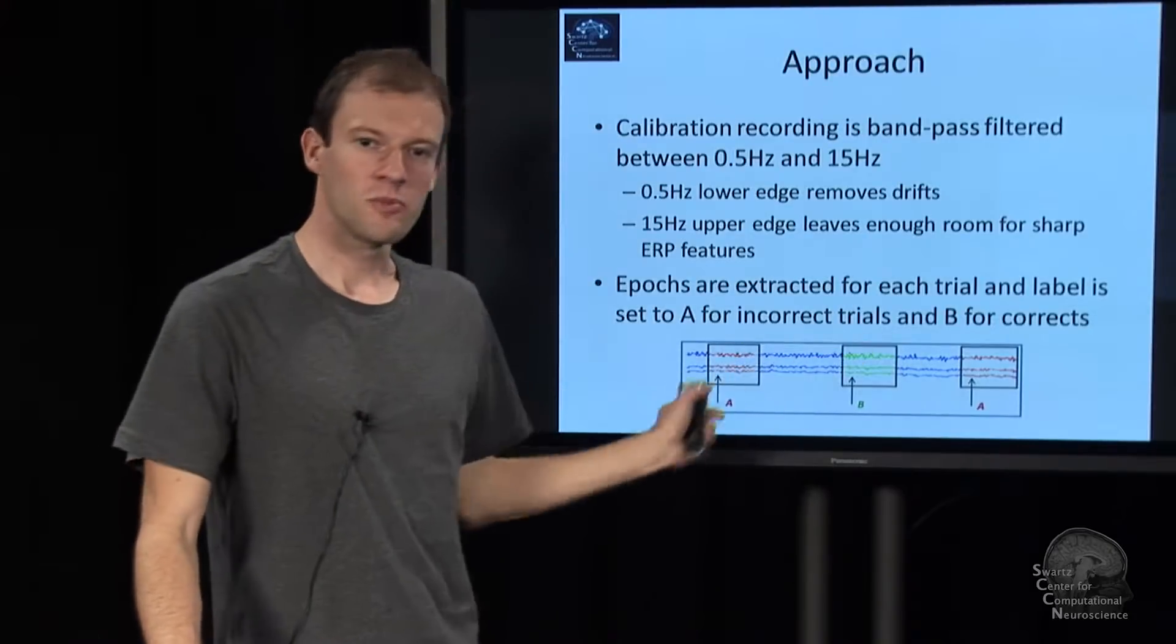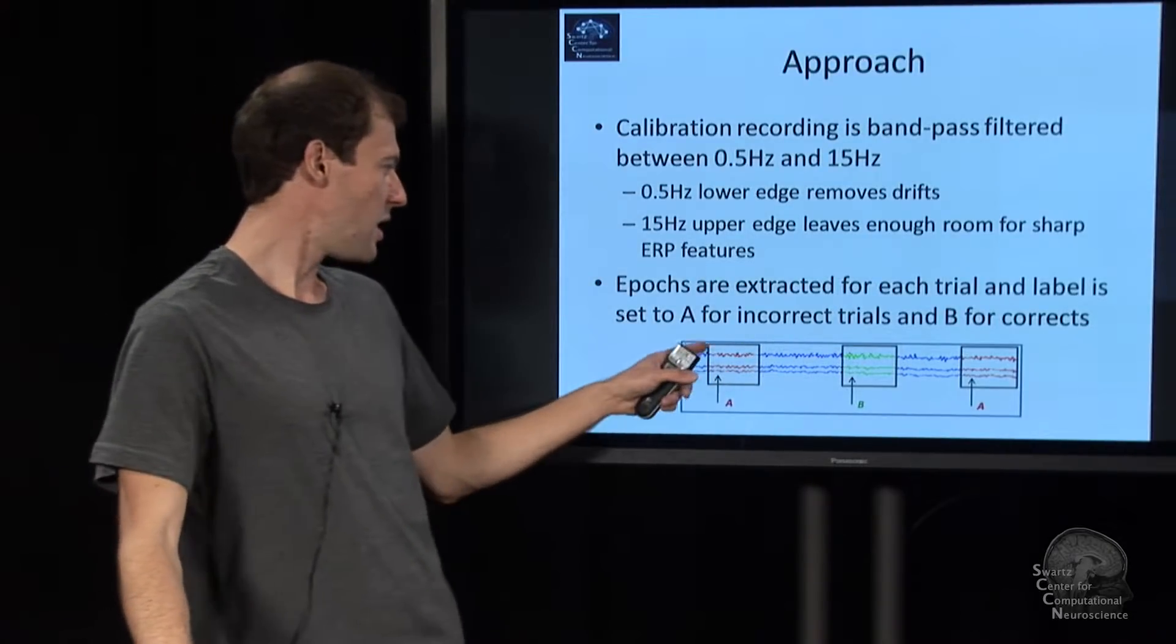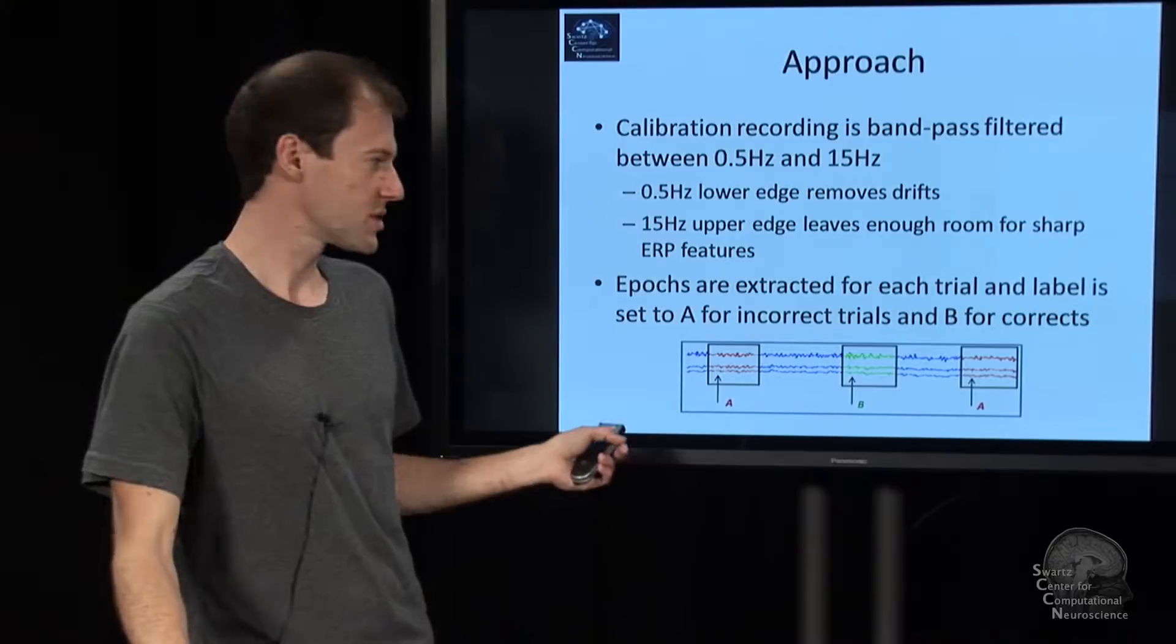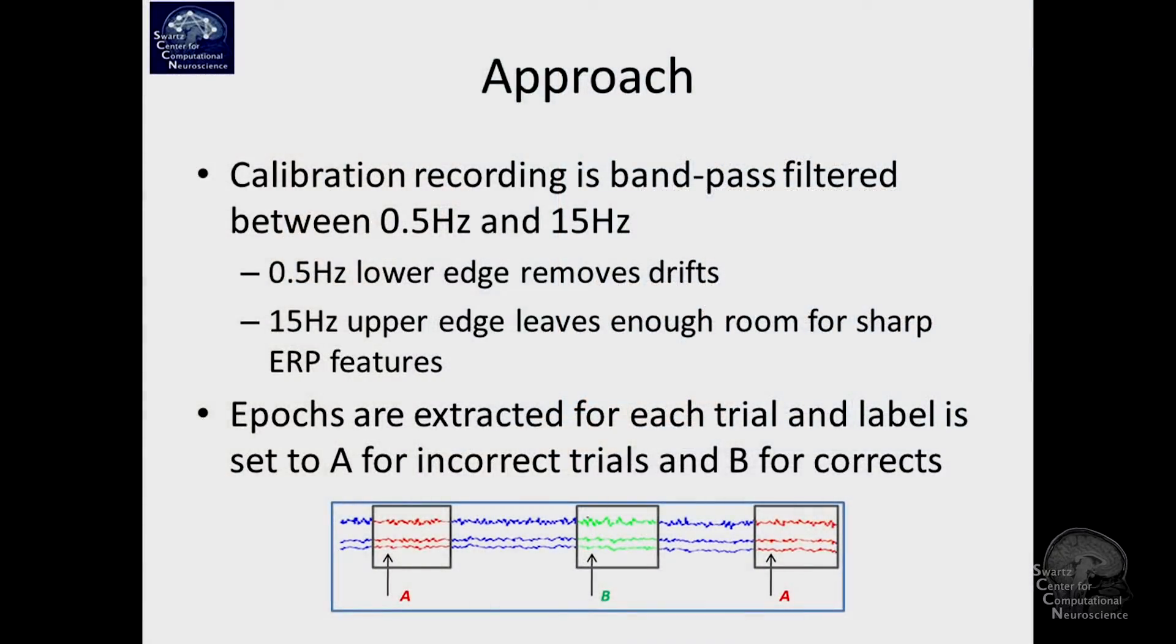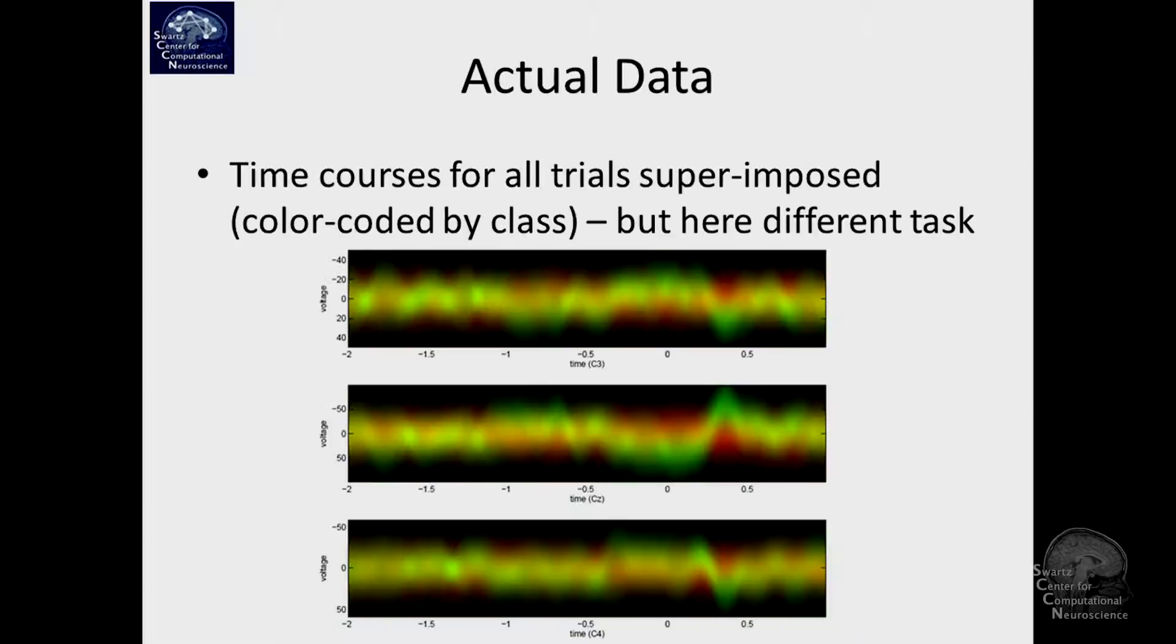We extract our epochs like we discussed before. It's M by J channel samples for real this time. We label them with A for incorrect and B for correct, getting 330 trials.